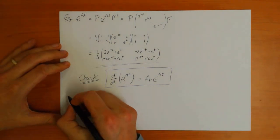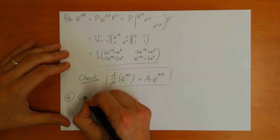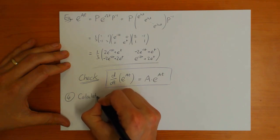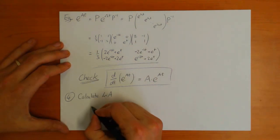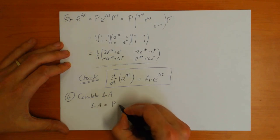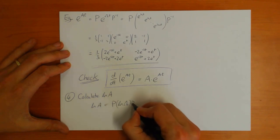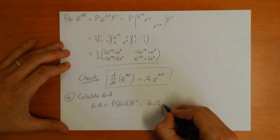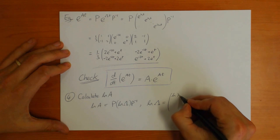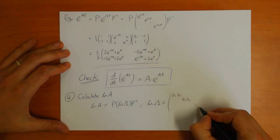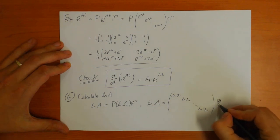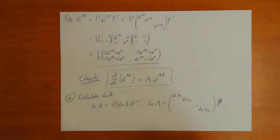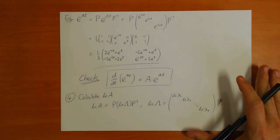You can also calculate the log of a matrix A in the same way. The log of the matrix A will be P times the log of the matrix Lambda times P-inverse, and the log of the diagonal matrix Lambda is just the matrix which has the log of each eigenvalue on the diagonal. So in this way you can also calculate logs of matrices. The diagonalization formula gives you a way of calculating various different functions of matrices, which is very useful.